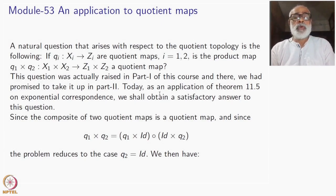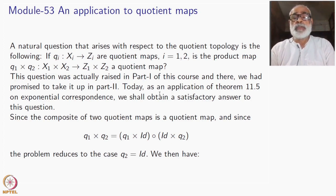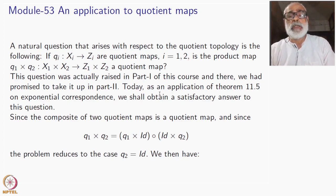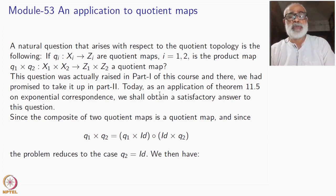Hello, welcome to module 53 of NPTEL NOC on point set topology part 2. The title of today's talk is an application to quotient maps of part of the exponential correspondence that we have studied last time. A natural question that arises with respect to the quotient topology is: suppose you have two quotient maps q_i from X_i to Z_i, i equal to 1 and 2. Is the product map q_1 cross q_2 from X_1 cross X_2 to Z_1 cross Z_2 a quotient map?